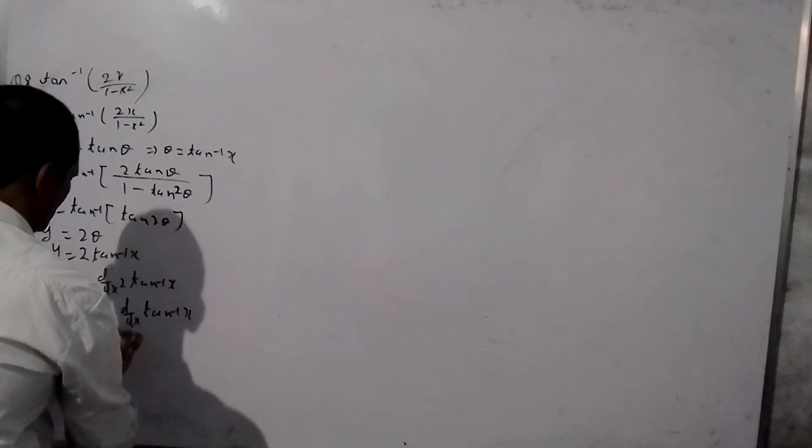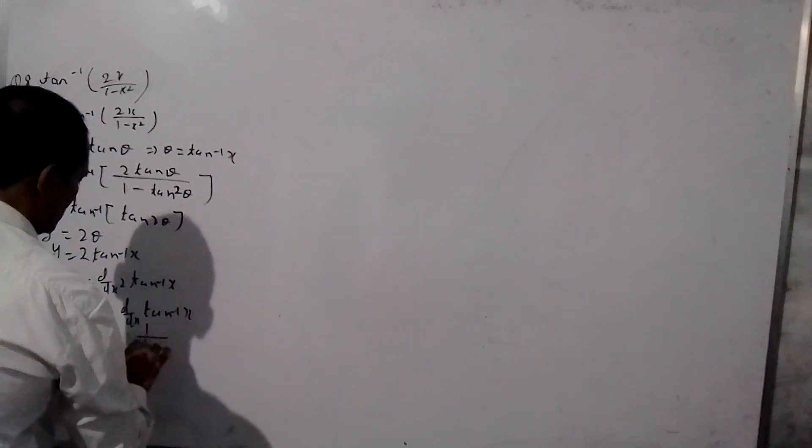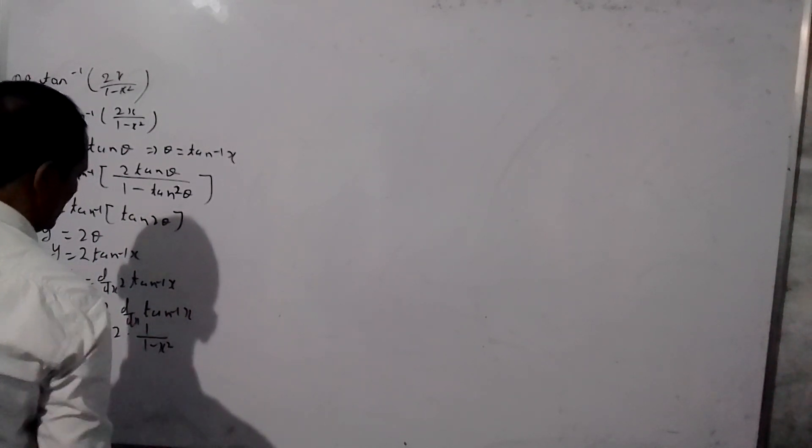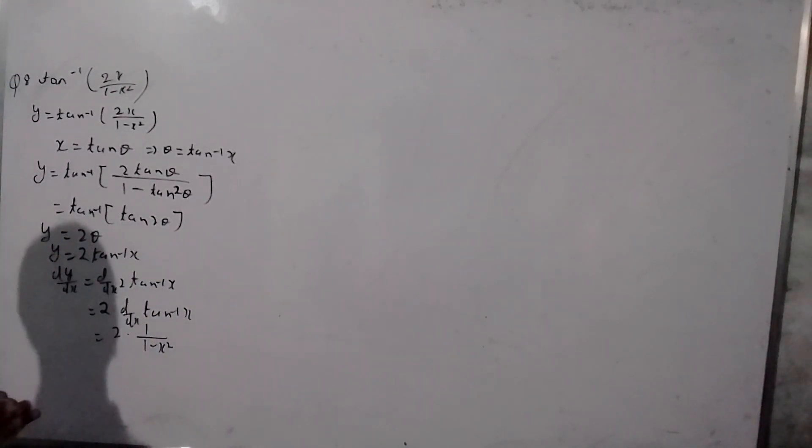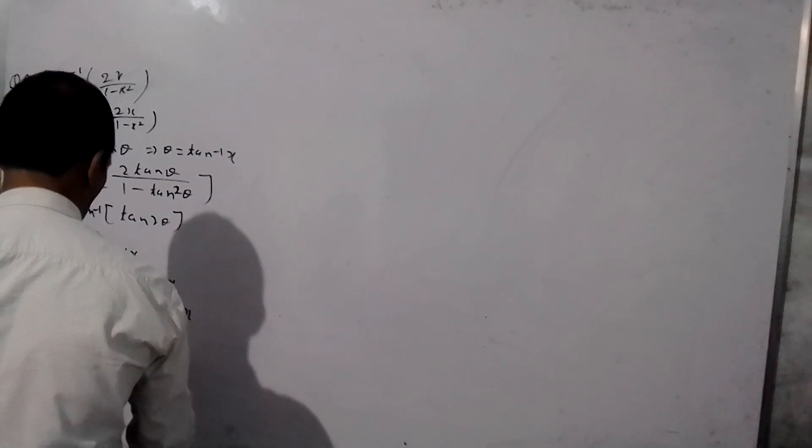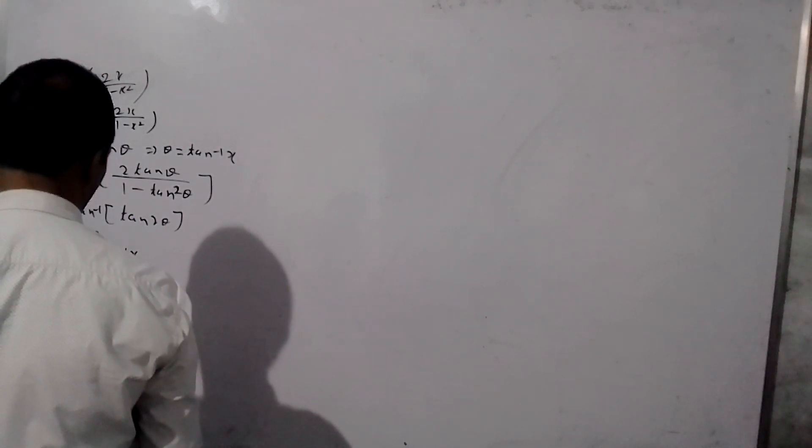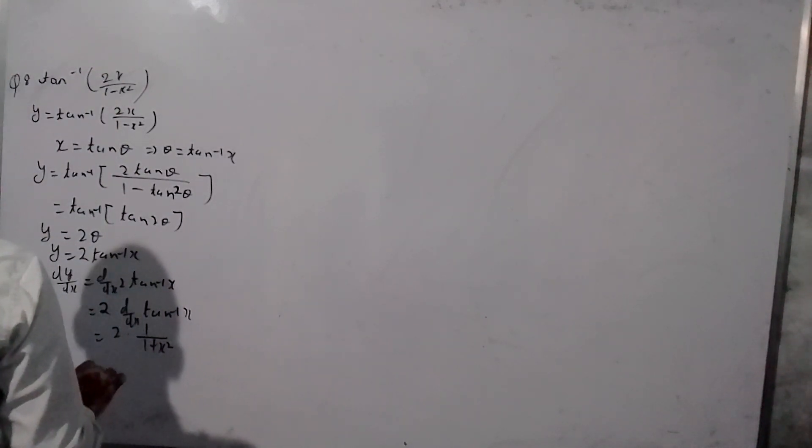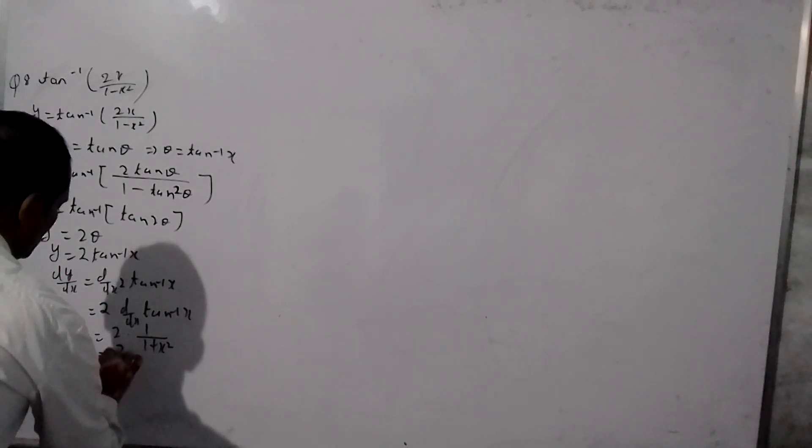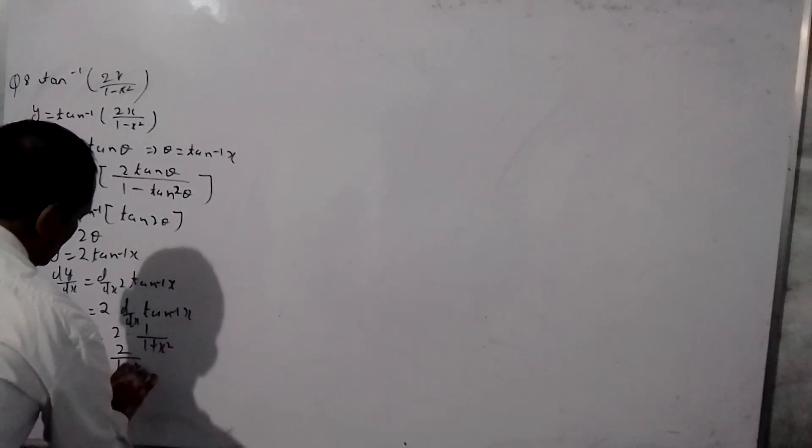Take this number 2: 1 upon 1 plus x squared. This is a very important part of this. 1 upon 1 plus x squared. Here are the differences: 2 upon 1 plus x squared.